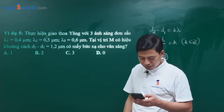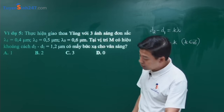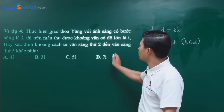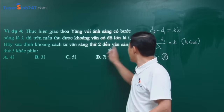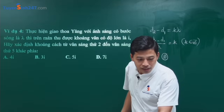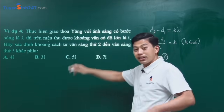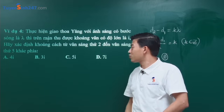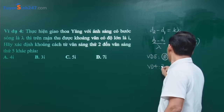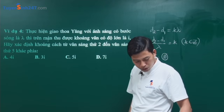Lưu ý: thầy bỏ qua ví dụ 4 (khác phía, đáp án 7i), ví dụ 3 là cùng phía. Cảm ơn bạn Toàn Lê đã nhắc thầy. Ví dụ 4 khác phía thì đáp án là 7i.